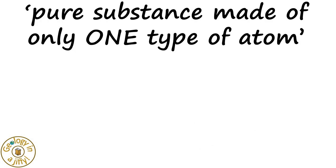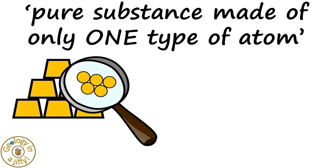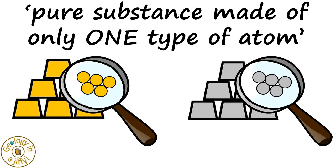An element is a pure substance made up of only one type of atom. For example, gold is made up of only gold atoms. Silver is made up of only silver atoms.